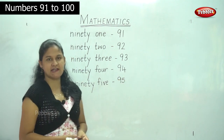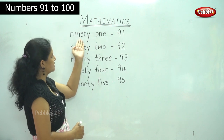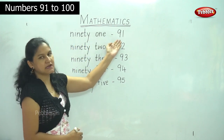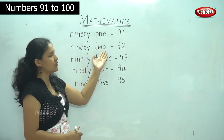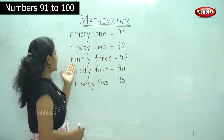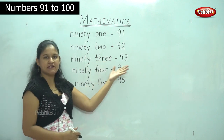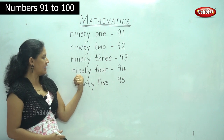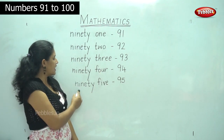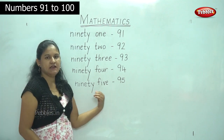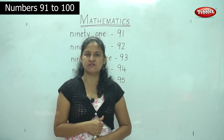Shall we say it once again so that it will be easy for you. 91: N-I-N-E-T-Y, ninety, O-N-E — 91. 92: N-I-N-E-T-Y, ninety, T-W-O — 92. 93: N-I-N-E-T-Y, ninety, T-H-R-E-E, three — 93. 94: N-I-N-E-T-Y, ninety, F-O-U-R, four — 94. 95: N-I-N-E-T-Y, ninety, F-I-V-E, five — 95. So now we have learned the number names for the numbers 91 to 95.